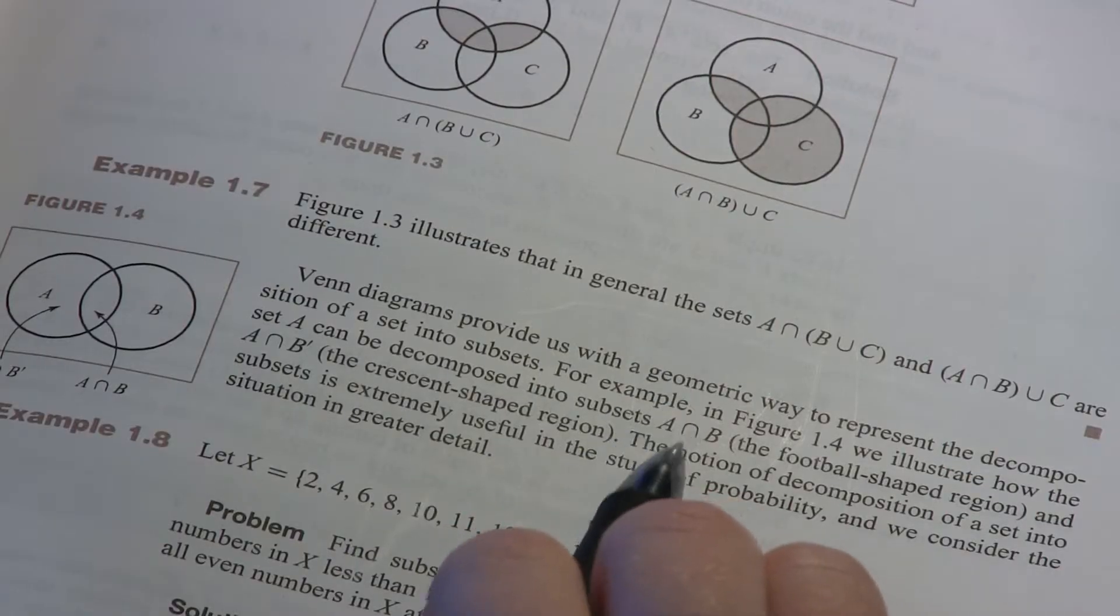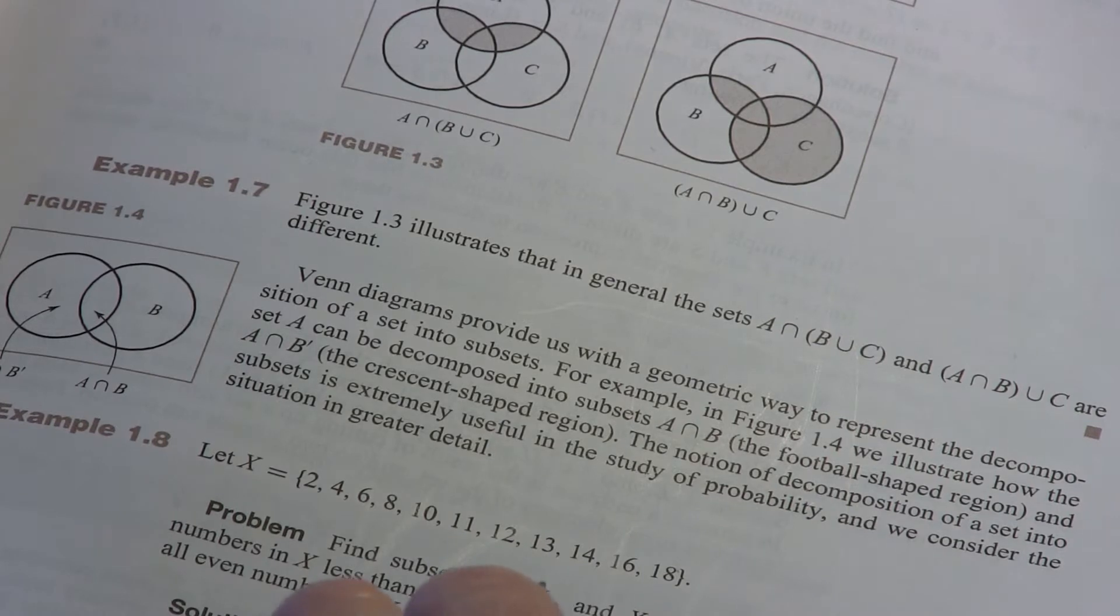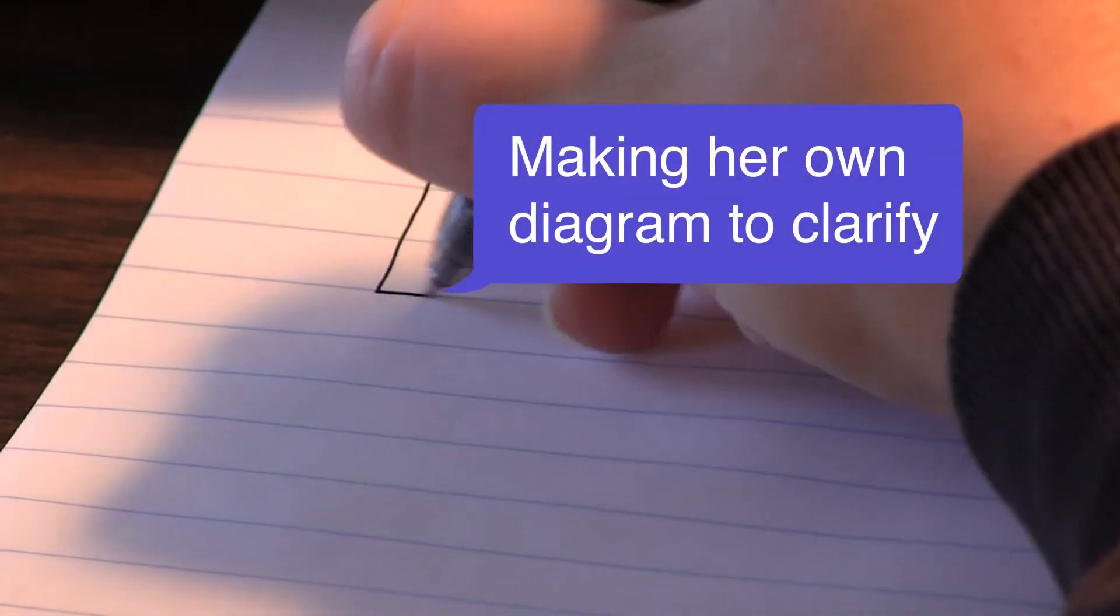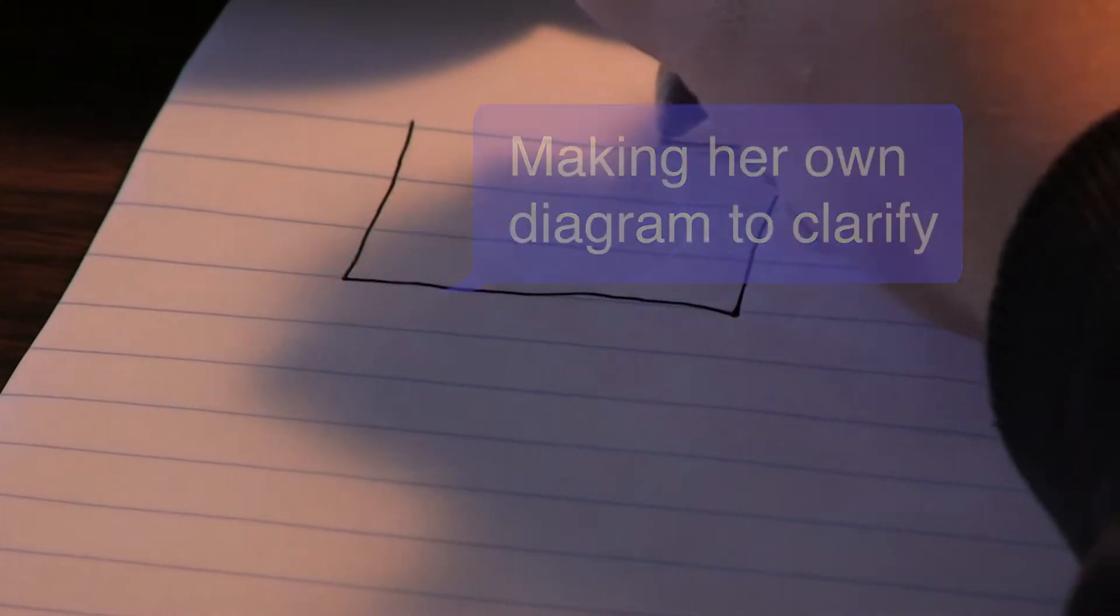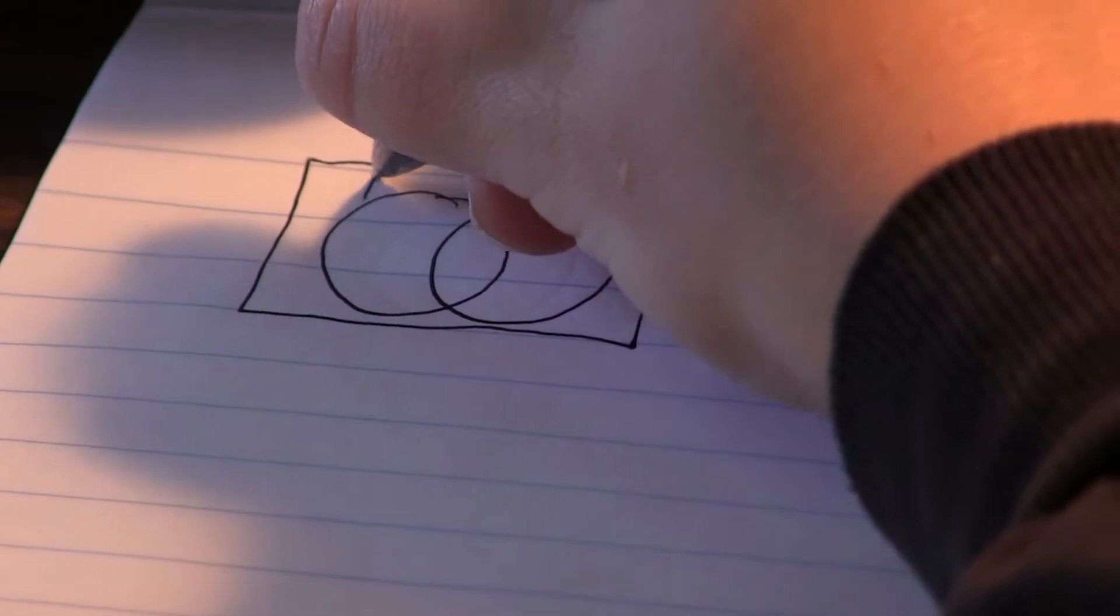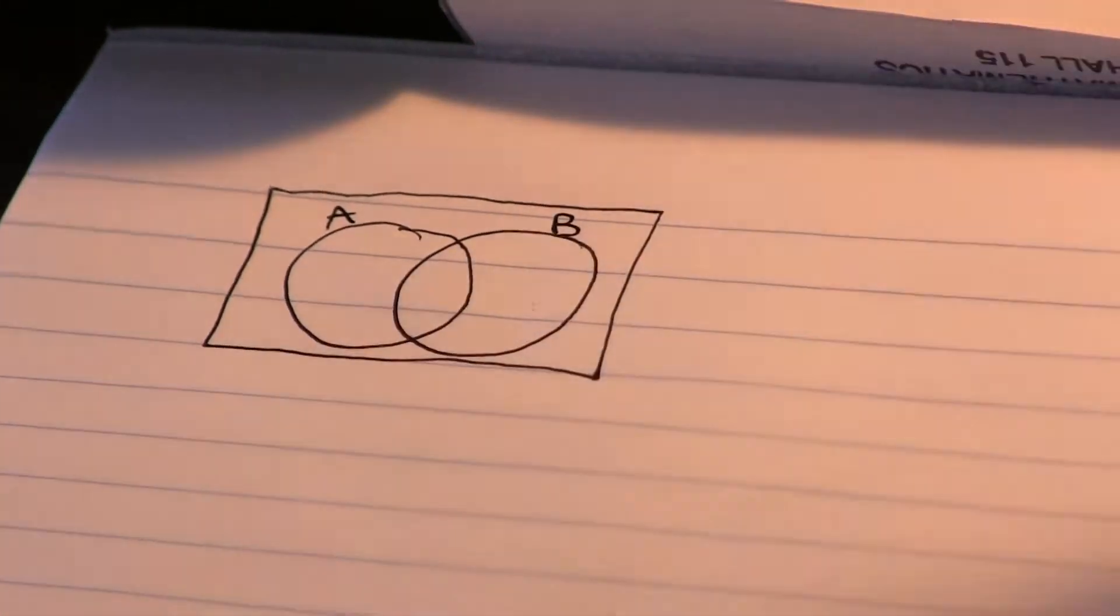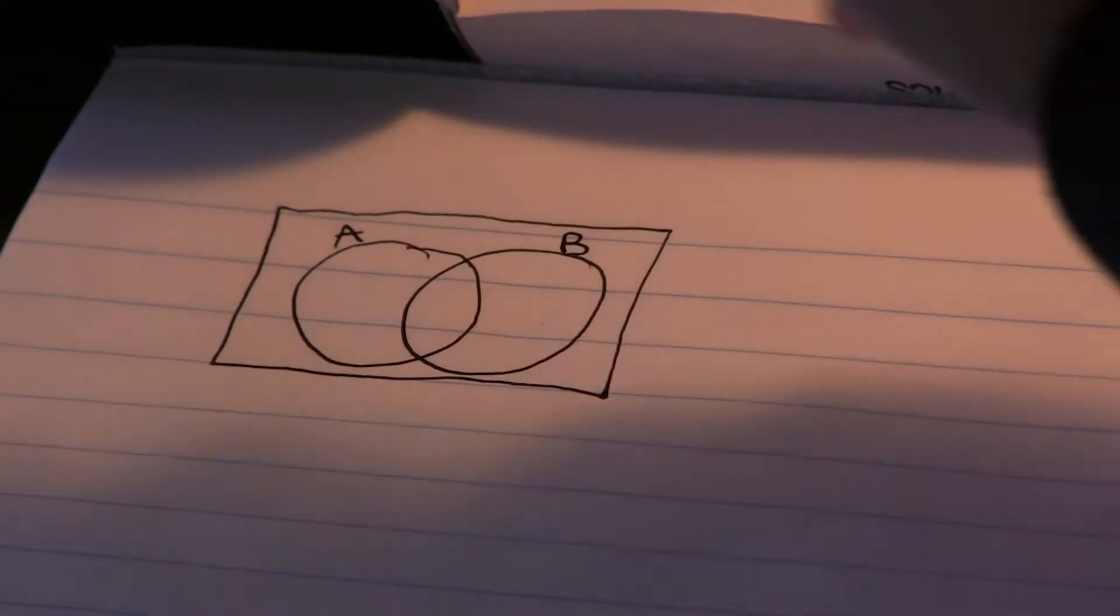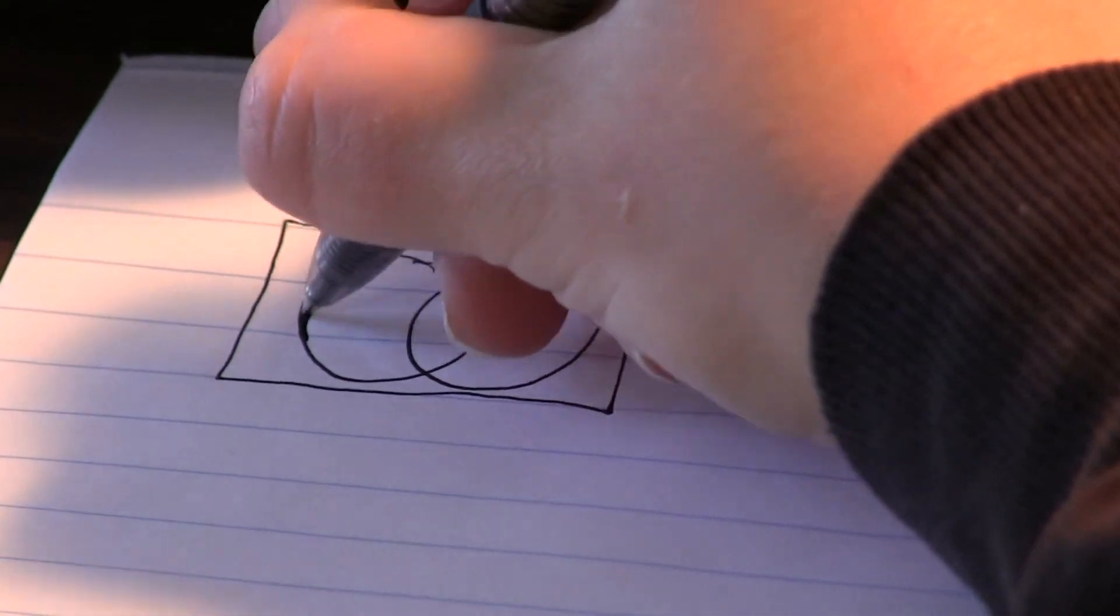For example, in figure 1.4 we illustrate how the set A can be decomposed into subsets A intersect B. Okay, so figure 1.4. So I'm decomposing A, so I'll make A stand out a little bit.